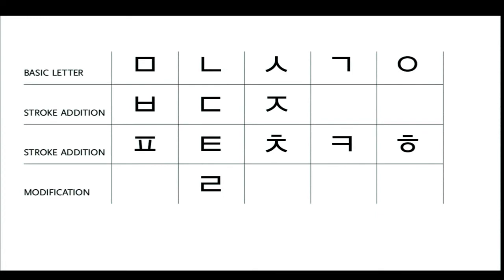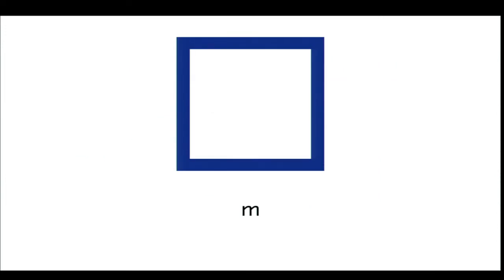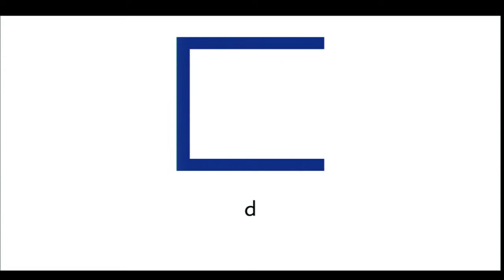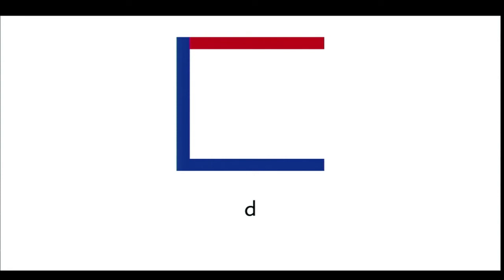The table shows the five consonant groups and related consonants in columns below the basic letter. For example, 'm' is the basic sound and 'b', which is also formed by using the lips, is composed with the top line being pulled down closer to the center. The 'd' uses the same tongue-to-palate articulation as the 'n' sound and so it's drawn with an additional top line. From 'd' to 't', there is yet another stroke added.